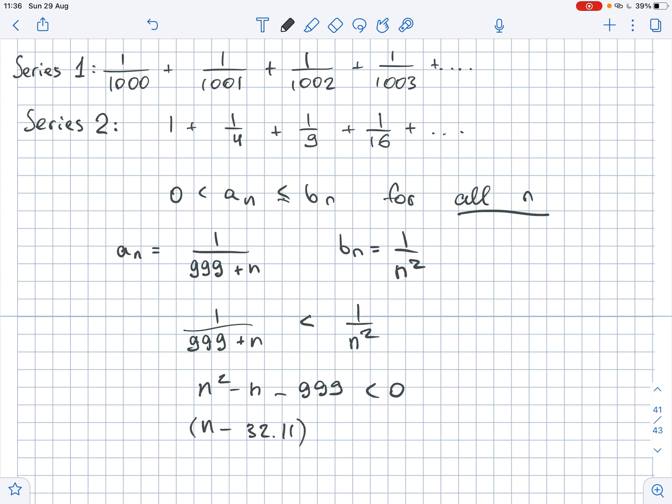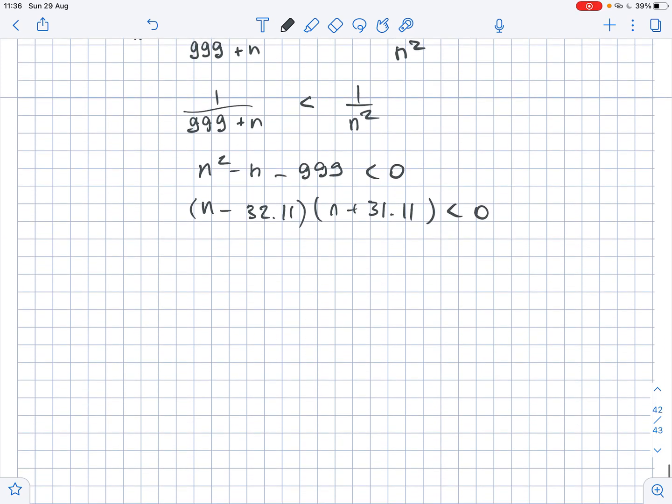If we solve this, we get that n minus 32.11 times n plus 31.11 is less than 0. So that means that this expression is larger than 0 for all n greater than or equal to 33.